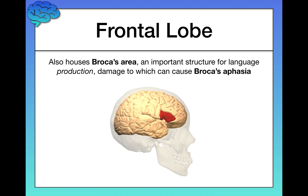With Broca's aphasia, people have an inability to produce language the way they wish they could. You can really hear them struggling to find the words they want to communicate. They know what they want to say — the meaning is in their head — but they just can't find the words to get that information across. Keep that in mind as we contrast it shortly with Wernicke's area, which is quite different.